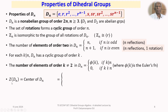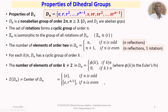The center Z(D_N) is the set of all elements of D_N that commute with every element. When N is odd, the center is trivial (order 1). When N is even, the center is {E, R^{N/2}}, which has order 2.